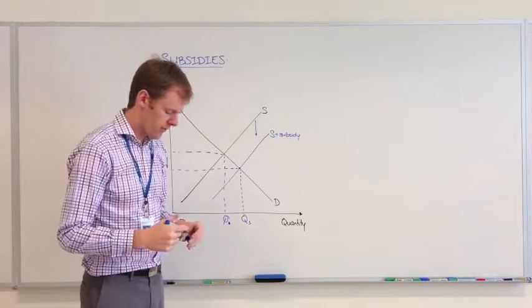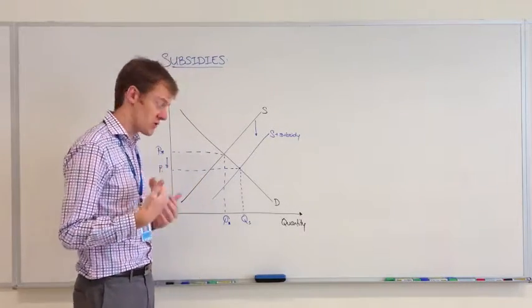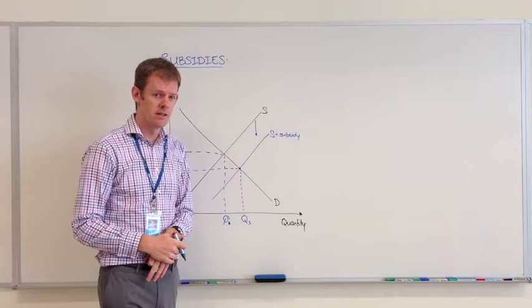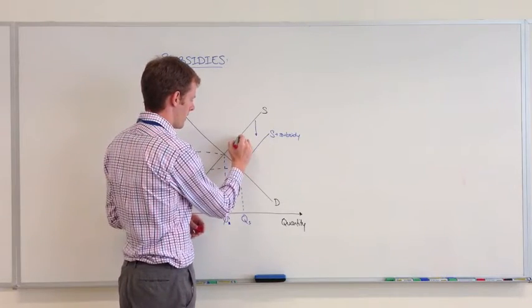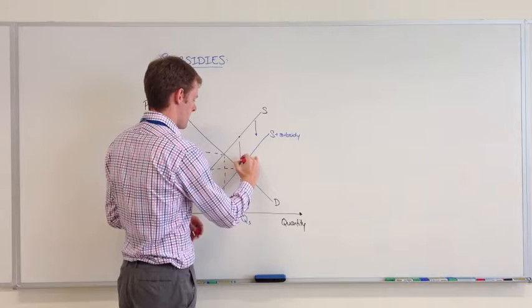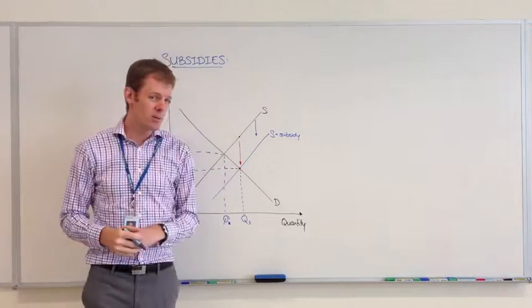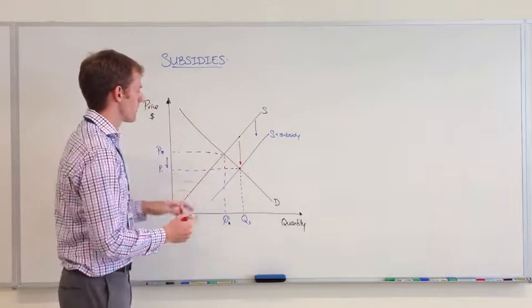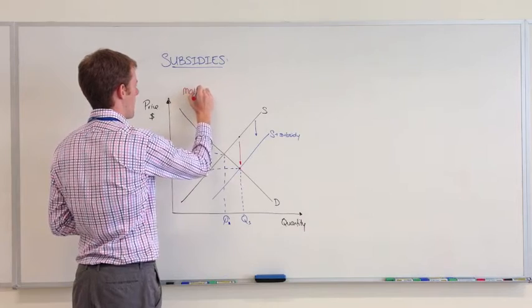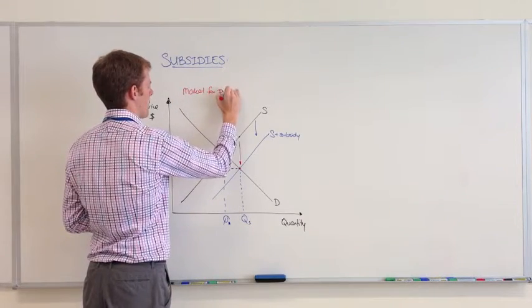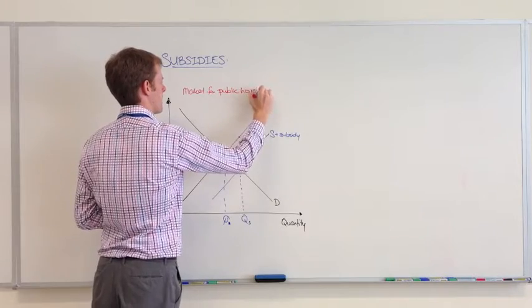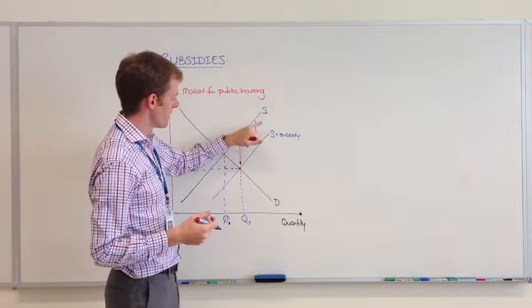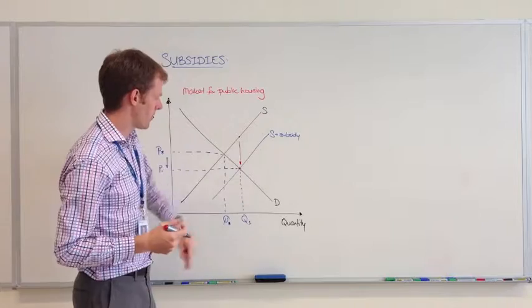But to achieve this, firms need to be offered a certain degree of motivation to increase their supply. We need to offer a considerable subsidy per unit to the producer to encourage them to do this. For example, if this was the market for public housing, and these are the producers of houses in the economy, then to achieve the subsidy and shift the supply curve down this way, they need an incredible subsidy.